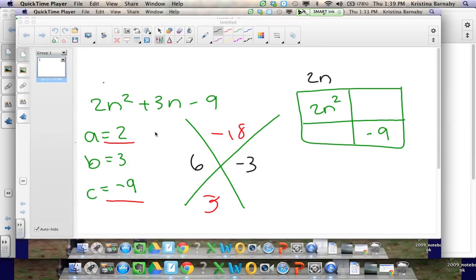Again, I put the 2n and the n. And now I need to figure out where these numbers will go. Well, 2 cannot get me to negative 3.